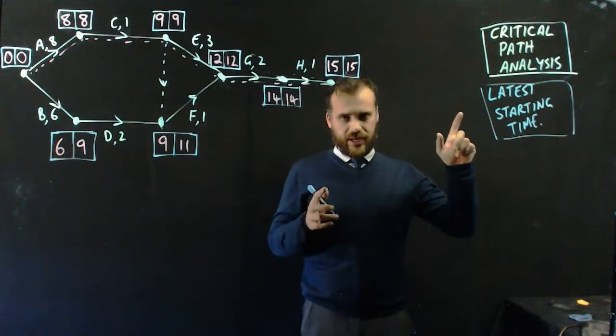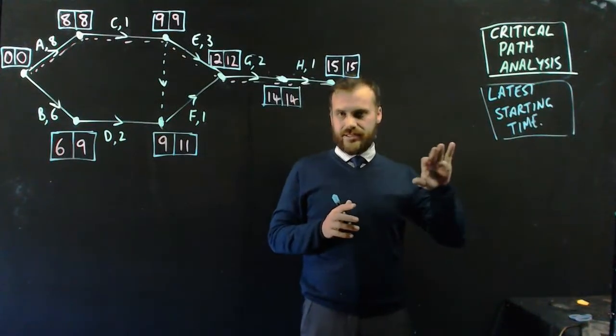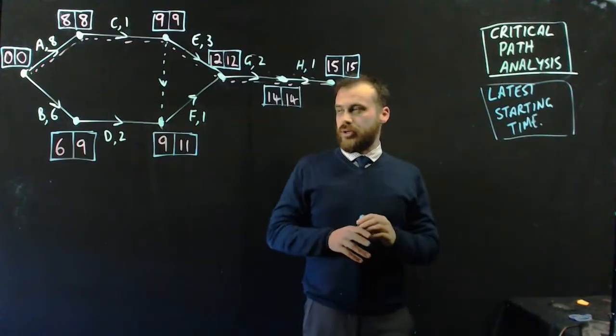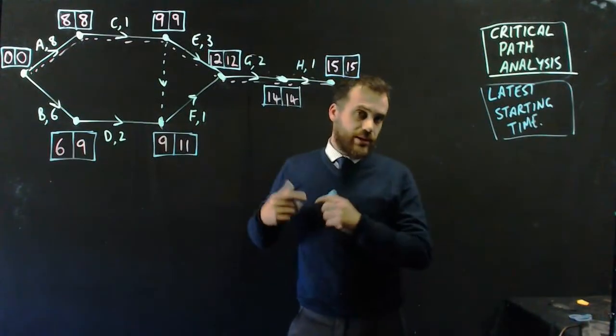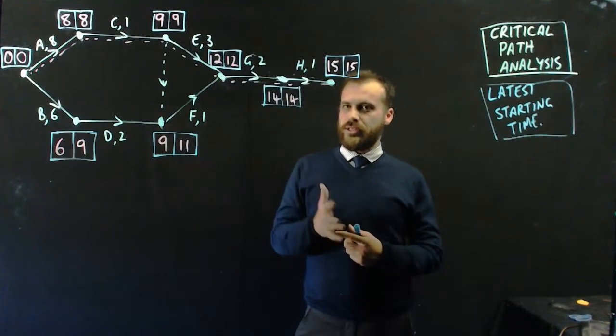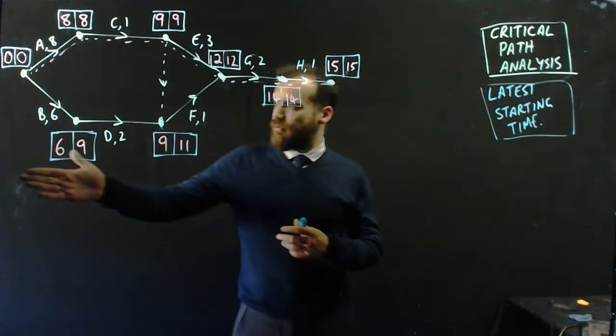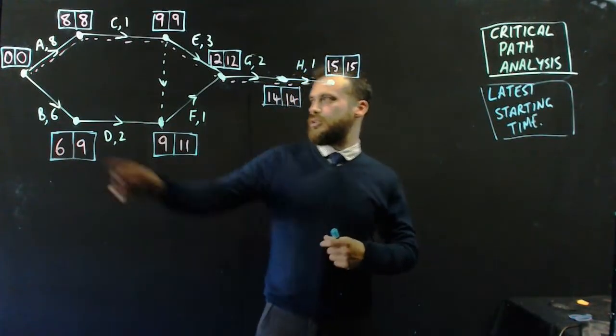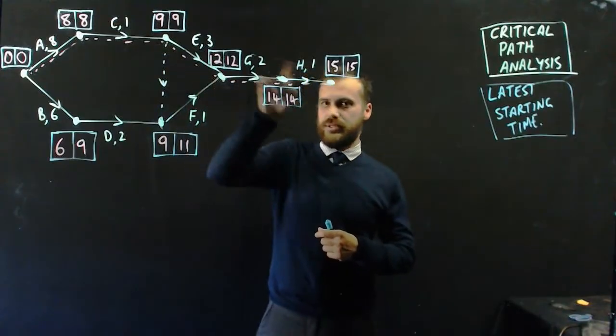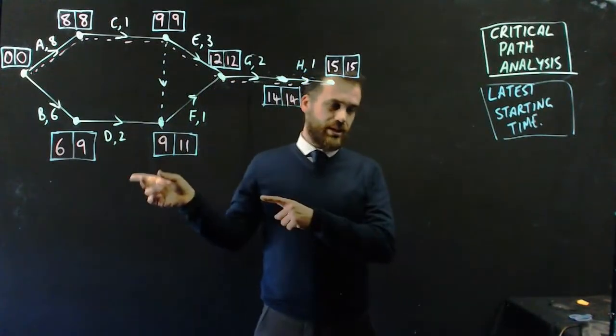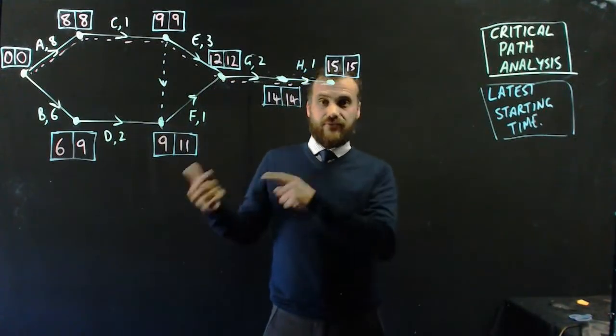So, a video on critical path analysis. We're going to finish it off with latest starting time. This is a weighted activity network, and I've already done two things. I did some forward scanning to find earliest starting times, and then I did backward scanning to find latest finishing times.